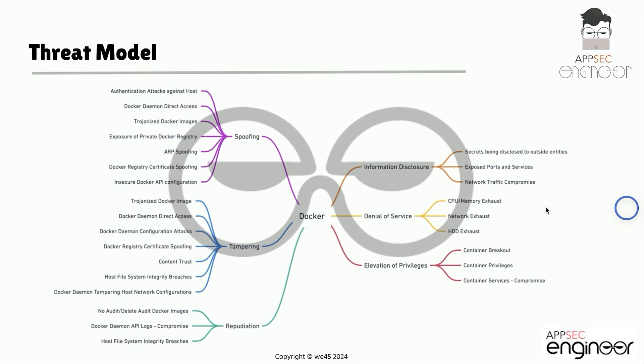So let's go ahead and look at our threat models. This is the very high-level threat model where we are using STRIDE. We have a bunch of potential attacks: spoofing, tampering, information disclosure, denial of service, and elevation of privileges.